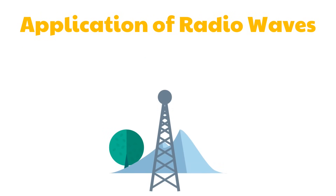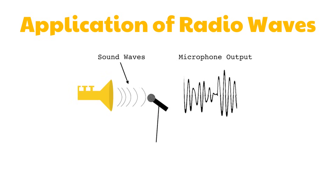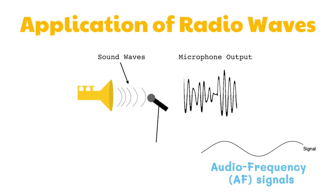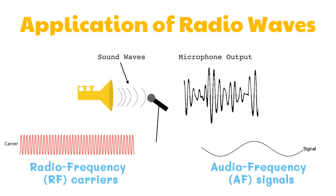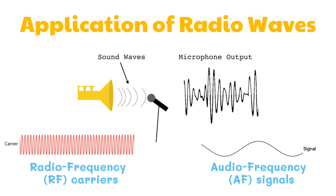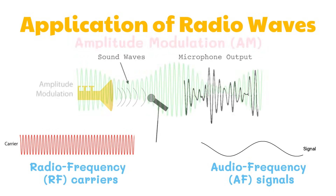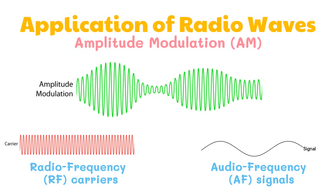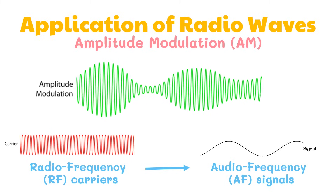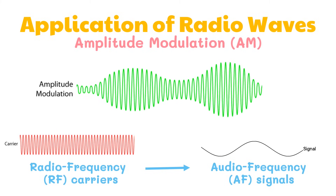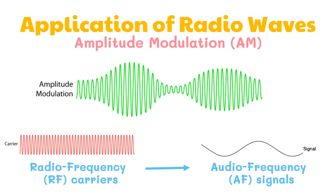Medium and high-frequency waves are used for broadcasting by local radio stations. In a radio station, sound is converted by a microphone into patterns of electric current variations called audio frequency or AF signals. High-frequency radio waves called radio frequency or RF carriers can be modulated to match the electronic signal. In amplitude modulation or AM, the amplitude of the radio waves changes to match that of the audio frequency signal. This is used in standard broadcasting because it can be sent over long distances.